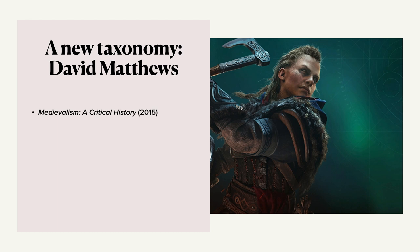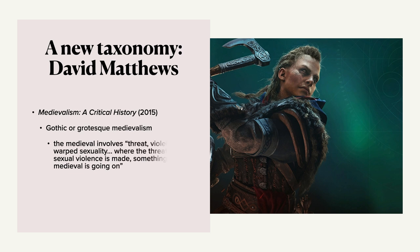Matthews is writing mostly about 19th-century medievalism, but he comes up with two particular aspects of medievalism — a sort of dichotomy. First is gothic or grotesque medievalism, which he defines as where the medieval involves threat, violence, and warped sexuality. Where the threat of sexual violence is made something medieval is going on — three words for you: Game of Thrones. We look at the Middle Ages as a place where bad things happened. The other part of the dichotomy is romantic medievalism. The interesting thing Matthews says is that these two types of medievalism don't exclude each other — you can have gothic and romantic medievalism within the same text.